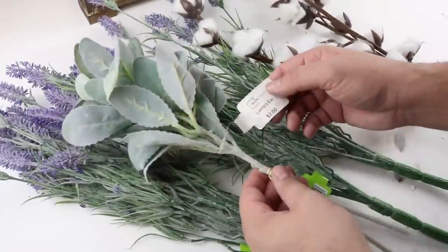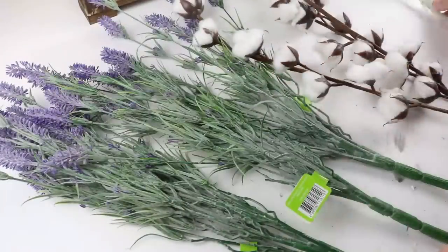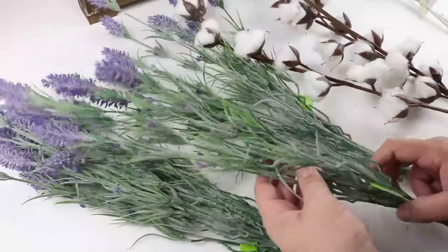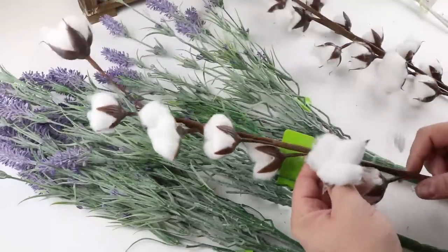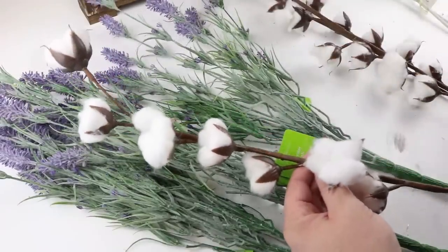For the flowers we're using lamb's ear and lavender from Walmart and cotton from Dollar Tree and Hobby Lobby. It took us a little bit of time to figure out the arrangement so we didn't show that. If you'd like to see that please let us know in the comments so we can show you next time.